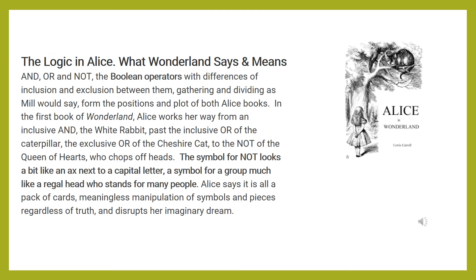You can also analyze Wonderland through Boolean AND, OR, and NOT operators. In the first book, Alice works her way from an inclusive AND of the White Rabbit, past the inclusive OR of the caterpillar, the exclusive OR of the Cheshire Cat, to the NOT of the Queen of Hearts who chops off heads. The symbol for NOT looks a bit like an axe next to a capital letter — a symbol for a group, much like a figurehead who stands for many people. Alice says it is all a pack of cards — meaningless manipulation of symbols and pieces — and disrupts her imaginary dream.